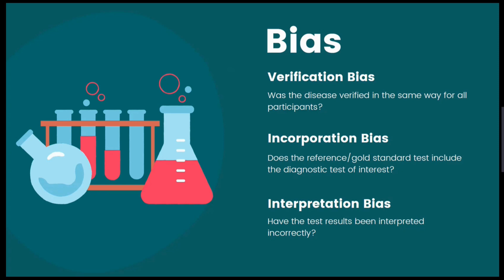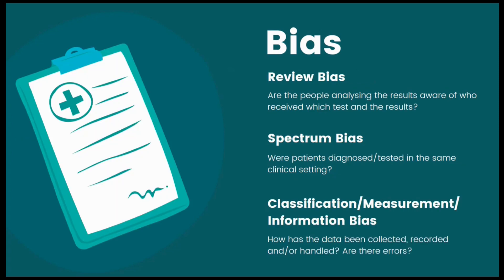Next, we have interpretation bias, which is when errors occur in how the results are interpreted. Our fourth bias is review bias, which is connected to interpretation bias. This can often happen if no blinding has happened within the study and the researchers are influenced by knowing who received which test and what the results were.